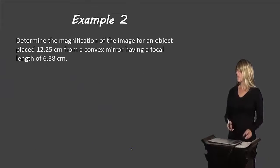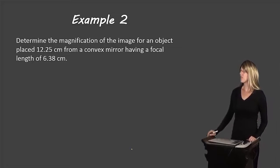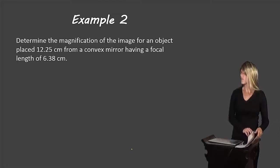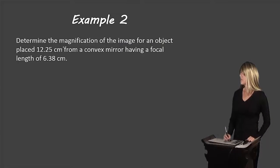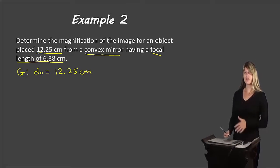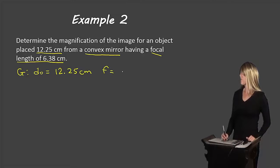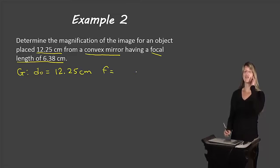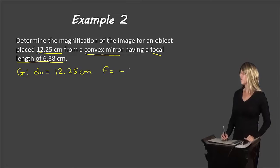Let's look at another example. Determine the magnification of the image for an object placed 12.25 centimeters from a convex mirror having a focal length of 6.38 centimeters. Given information: DO = +12.25 cm (DO is always positive), and focal length F = −6.38 cm because it is a convex mirror, which requires a negative sign convention.